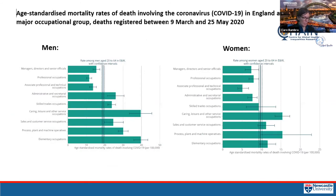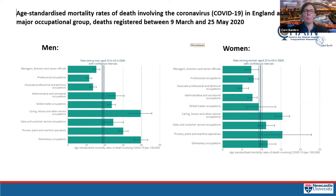Beyond neighbourhood-level deprivation, data also shows individual-level inequalities by occupational status. For both men and women, people in elementary occupations — working in factories, caring, retail, and leisure services — have much higher COVID-19 mortality rates than office workers and professionals. The gradient is slightly steeper among men, and there are also significant mortality rate differences between women and men across all occupational groups.